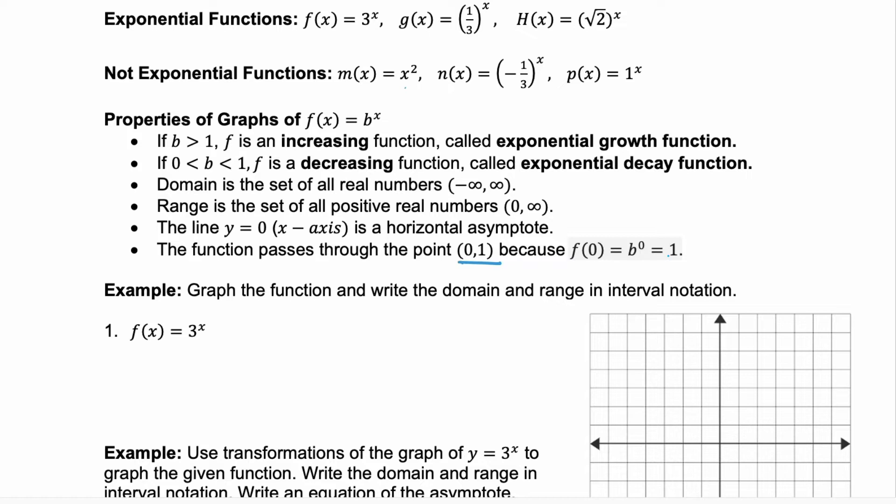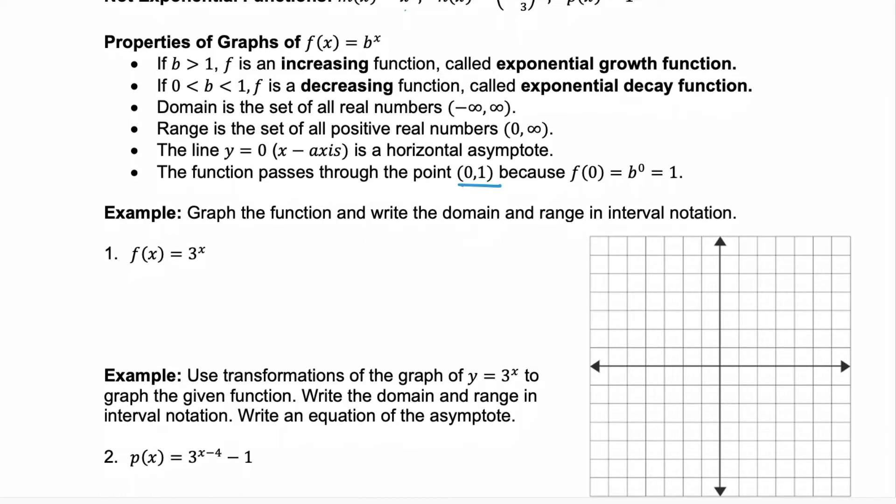Let's look at our first example. Here we're going to graph the function and then write the domain and range in interval notation. Our function here is 3^x. We know that we're going to have a horizontal asymptote right here, so this is our asymptote of y = 0. Then we know that our function is going to pass through the point (0,1). Let's find one more point. If we substitute in x = 1, f(x) = 3^1, or 3.